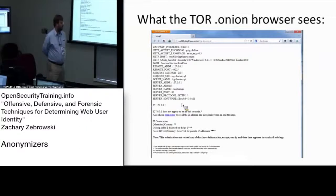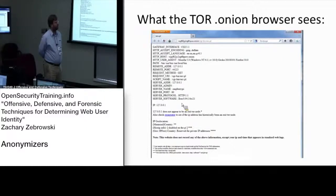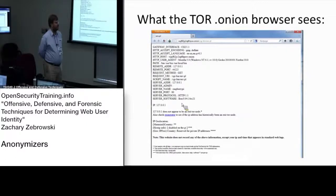Because TOR publicly lists all the servers that are acting as TOR servers. In order for TOR to function, there has to be a directory listing of servers which you can request an exit path out of to the internet. That's how the server knows if you are exiting from a TOR endpoint or not.